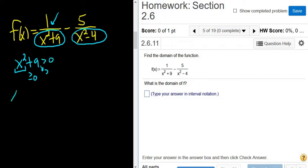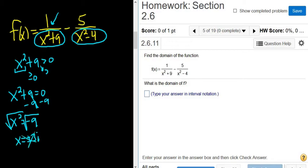If you're not sure, you can try to solve it for x by setting it equal to 0. Then you would subtract 9. So you would get x squared equals negative 9. Then take the square root of both sides. And that gives you x equals plus or minus 3i. So that's no good. We're only dealing with real numbers.